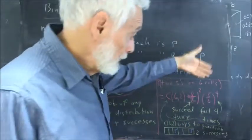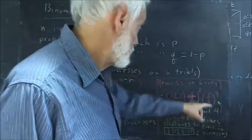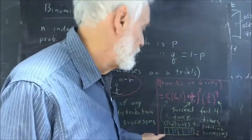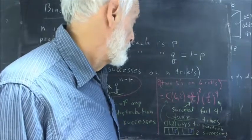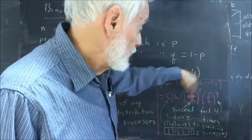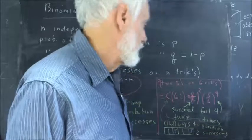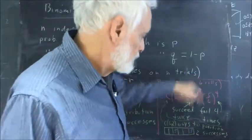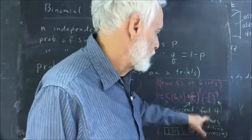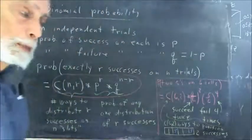Two successes means four failures. The meaning of this is here's your C of six two, ways to distribute them among the six trials. The one-sixth squared to succeed twice. The five-sixths to the fourth to fail four times. The probability one-sixth squared of succeeding on two rolls. The probability five-sixths to the fourth of failing on four rolls. Multiply all these together, you have your probability.